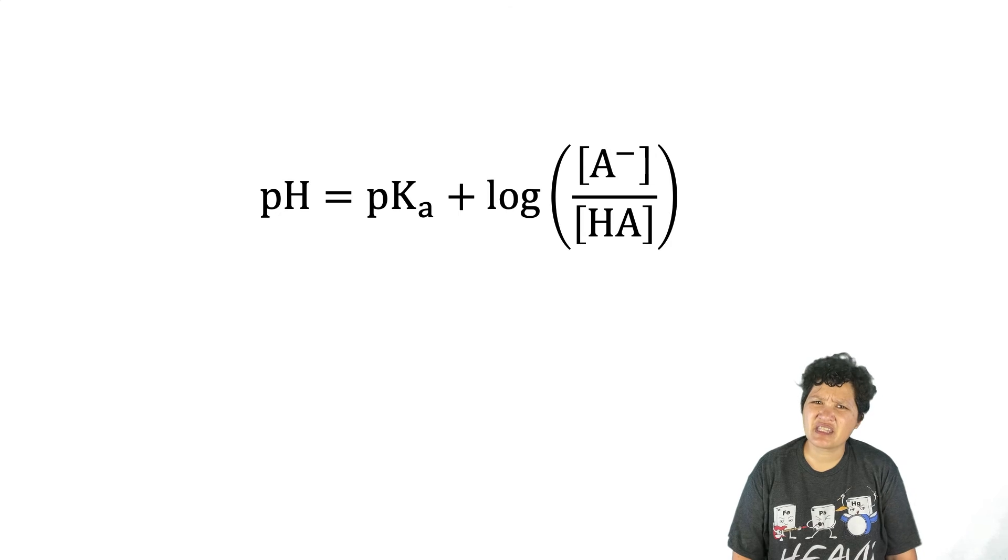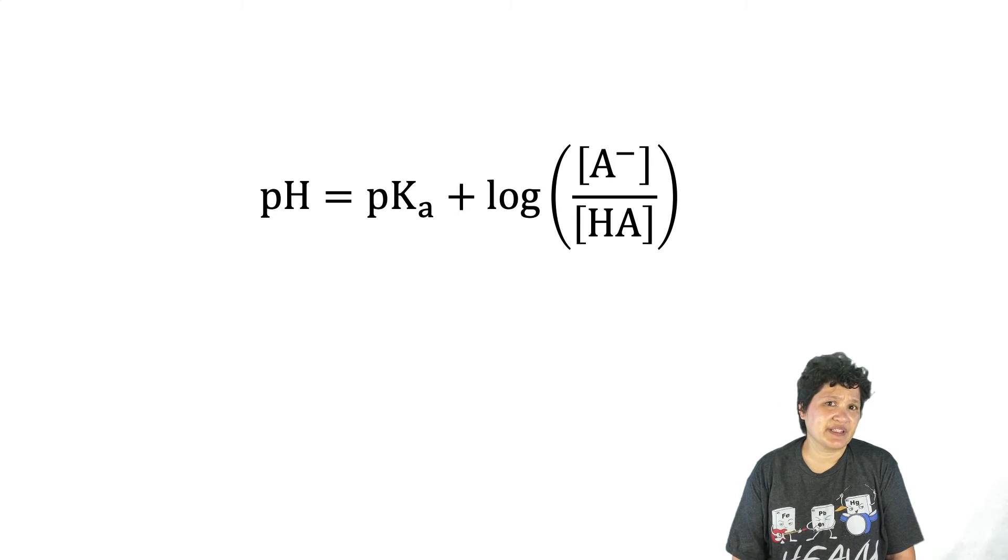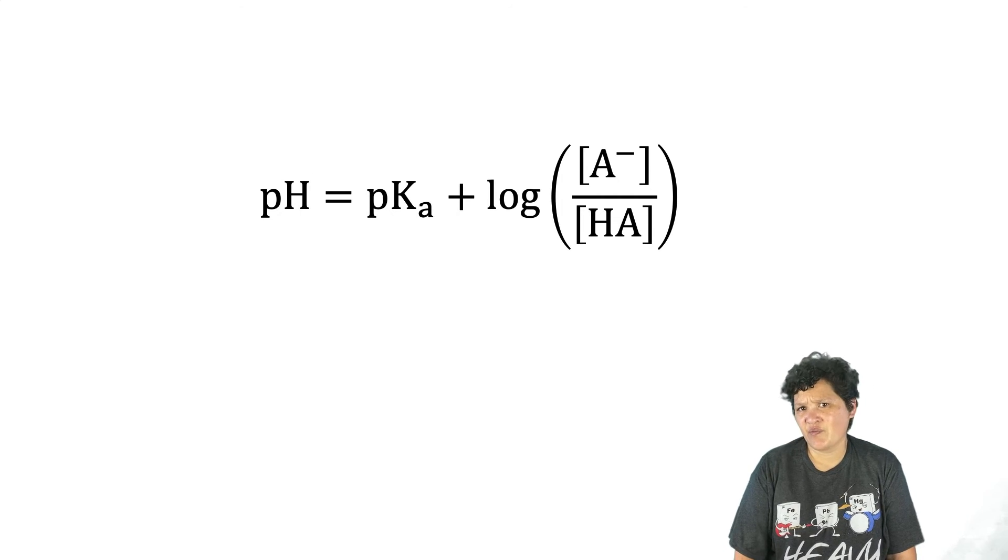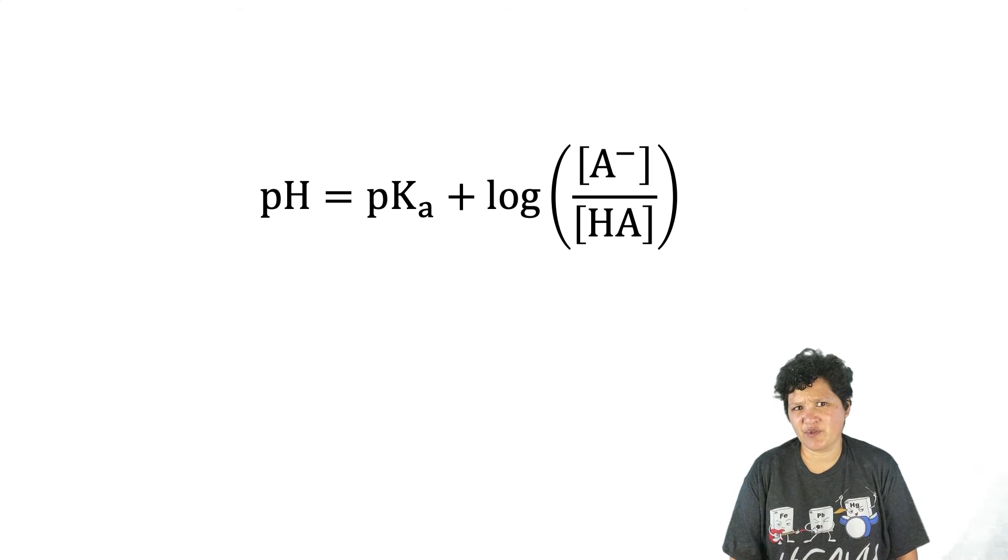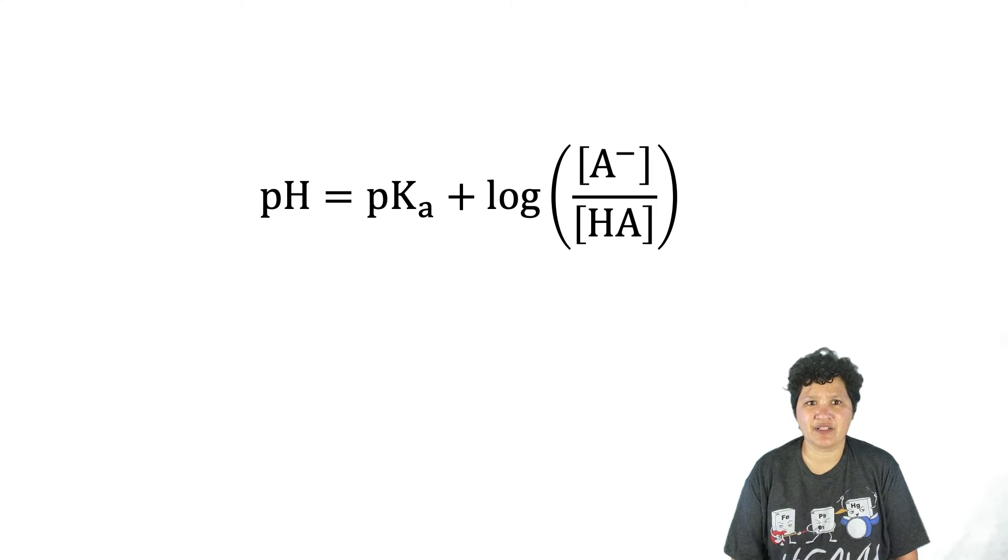Well, in some ways it's not. In certain situations in lab, you could use the empirical data and only the Henderson-Hasselbalch equation to calculate the A- and HA concentrations. But this equation is a little more flexible, and more importantly, it helps us explain some buffer behavior graphically.